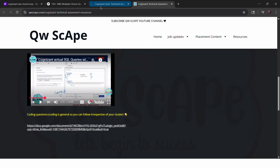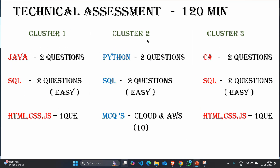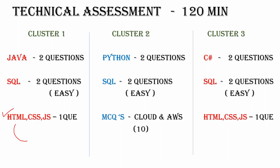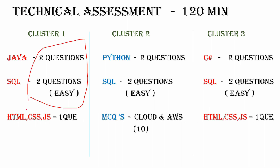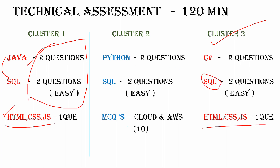Now I will tell you about the JavaScript and HTML questions. You have to build a front-end website using HTML, CSS, and JavaScript — they will automatically give you the inbuilt code and you just have to make some changes as per the given question. This HTML/CSS is difficult compared to Java and SQL. If you clear Java and SQL, there is no need to clear HTML/CSS/JavaScript. However, if you did not perform well in Java and SQL, then you have to solve the HTML/CSS/JavaScript. HTML/CSS/JavaScript is common for both Cluster 1 and Cluster 3, and SQL is also common for all clusters.